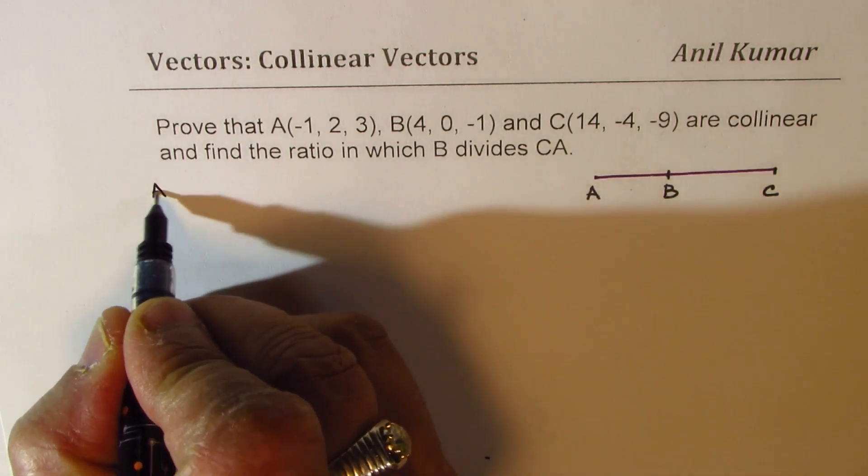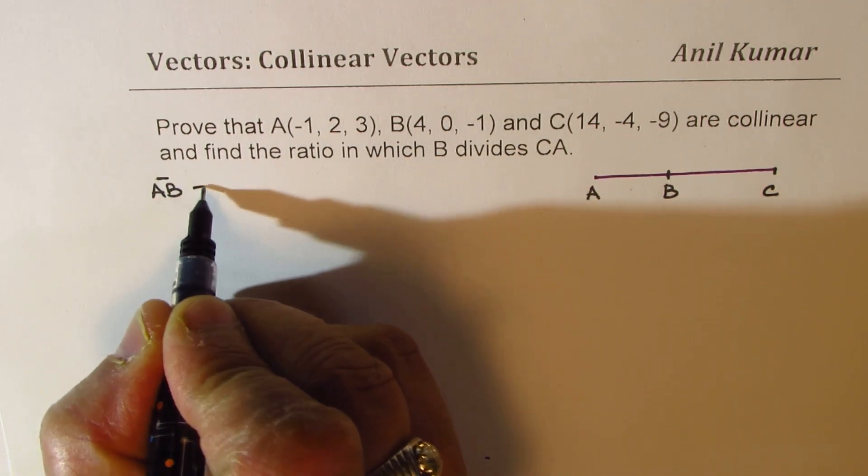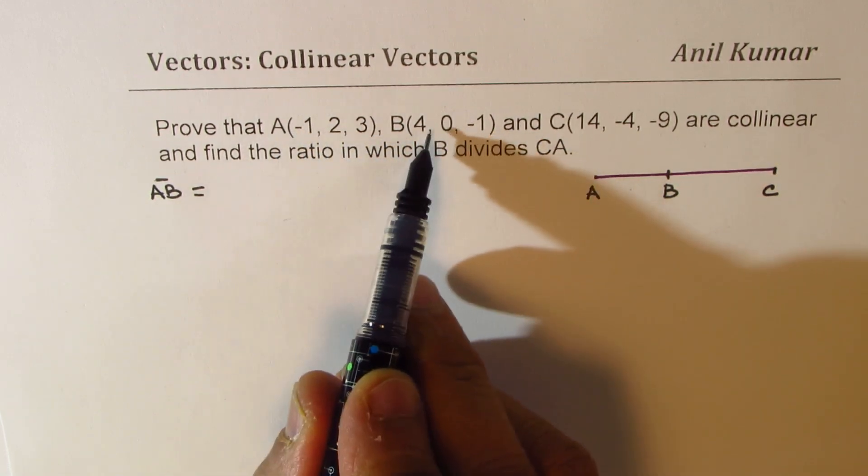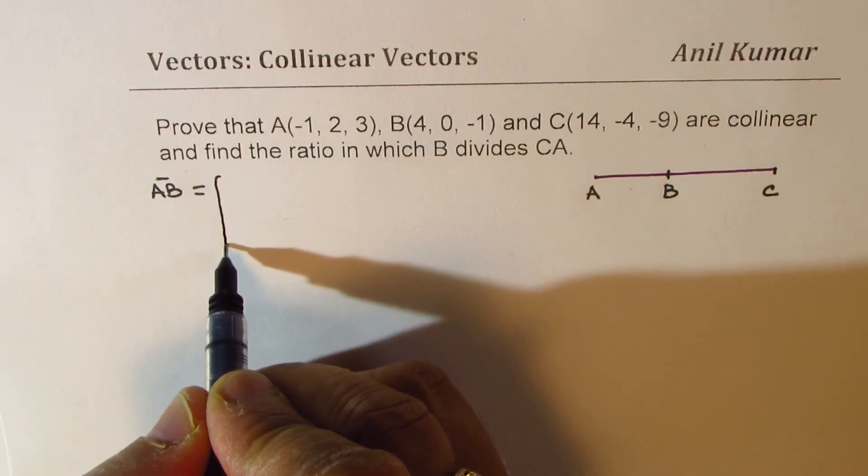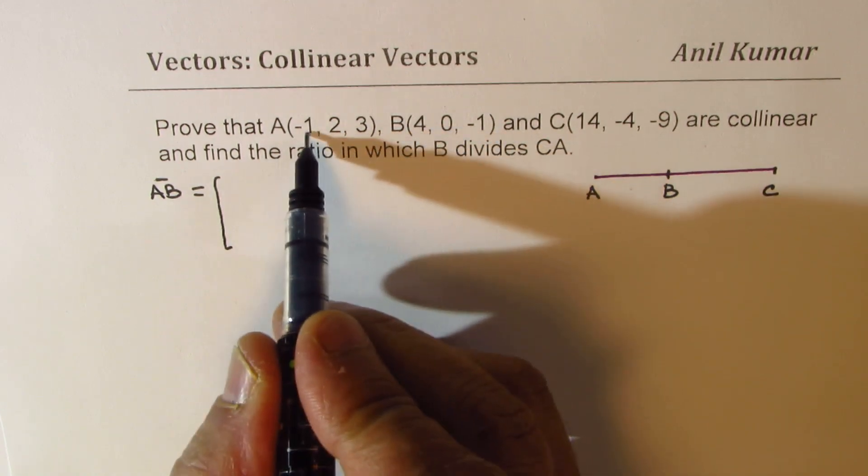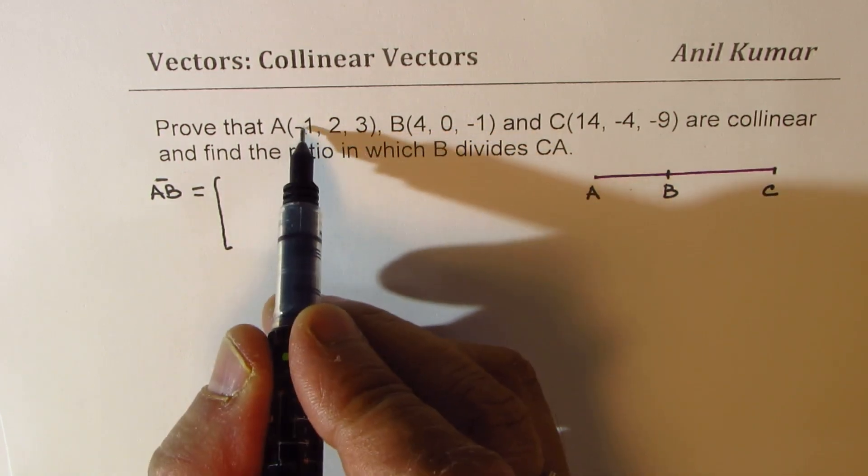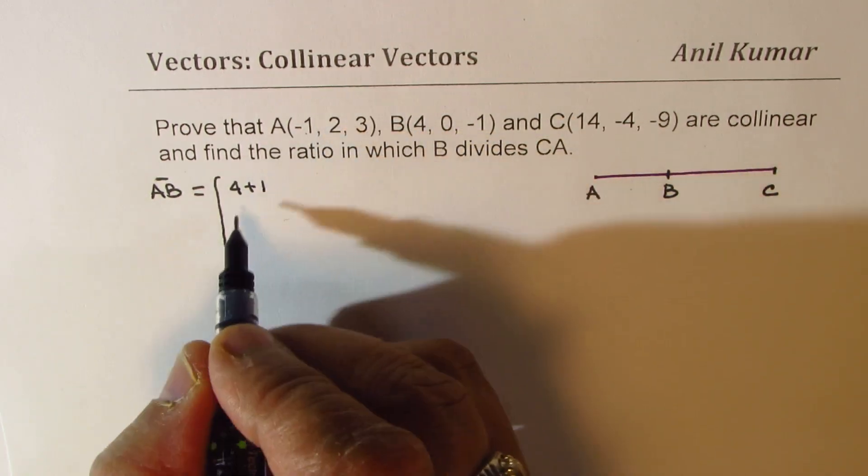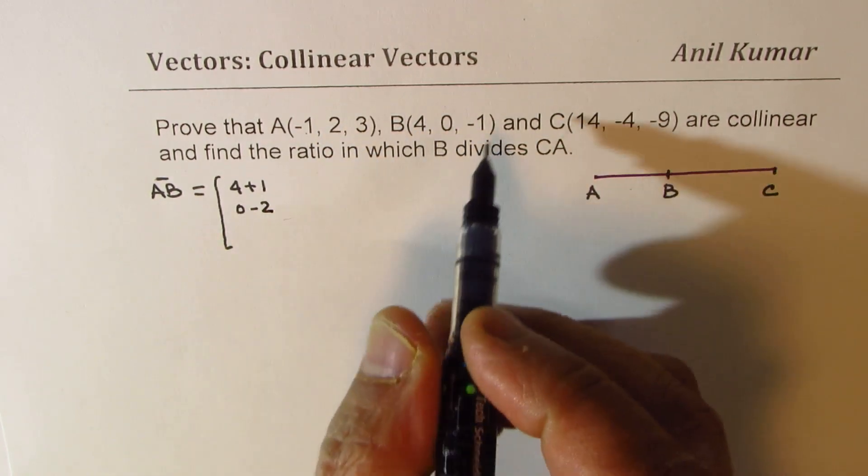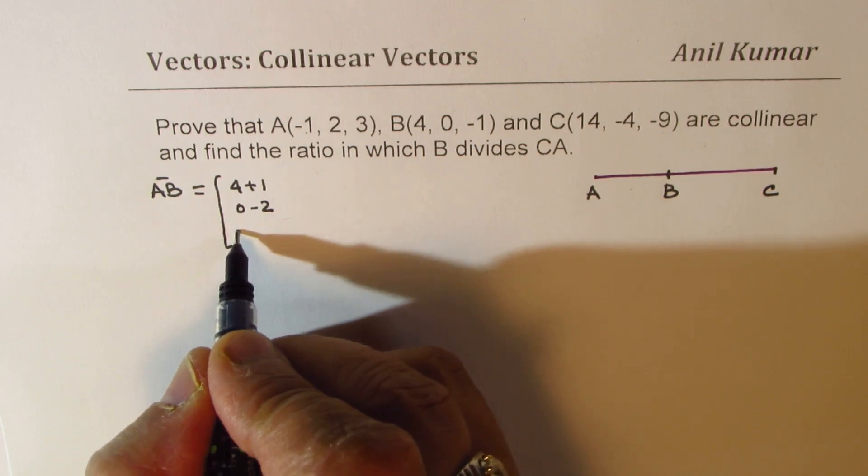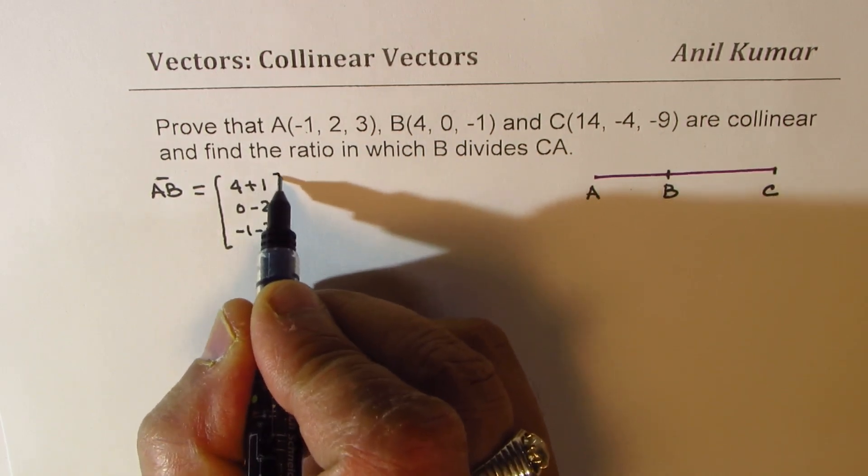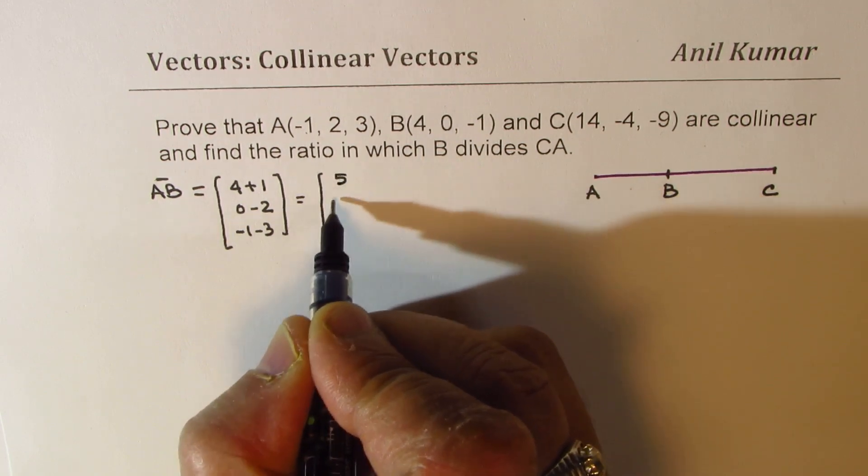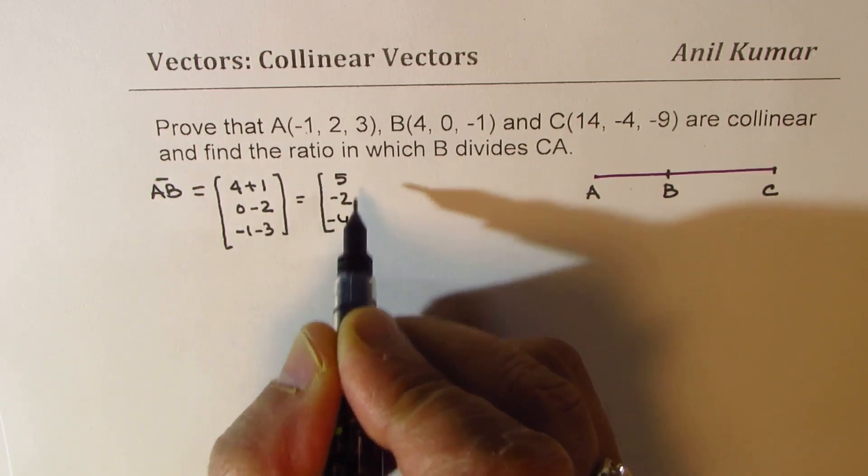So let us find the vector AB. What is AB equal to? Now AB can be written as B minus A. So 4 minus -1, I could write this as 4 plus 1, 0 minus 2, -1 minus 3, which is equal to 5, -2, and -4.